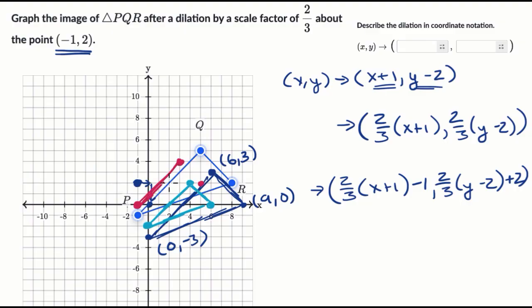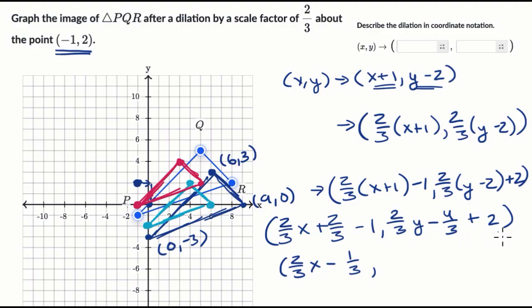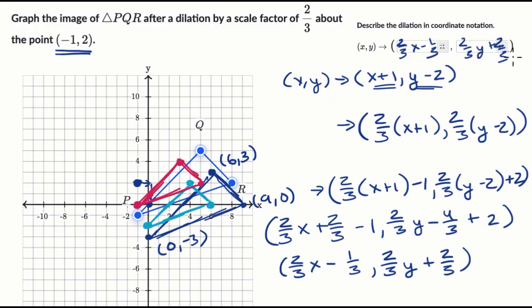My triangle finally looks like this after all three steps. This is my final dilation in coordinate notation, but let me simplify it with a little algebra. The x coordinate is two thirds x plus two thirds minus one, which simplifies to two thirds x minus one third. The y coordinate is two thirds y minus four thirds plus two; since two equals six thirds, this becomes two thirds y plus two thirds. So the final coordinate notation is x maps to two thirds x minus one third, and y maps to two thirds y plus two thirds.